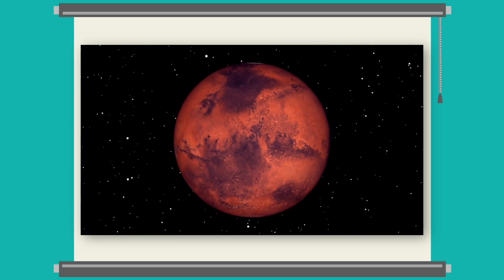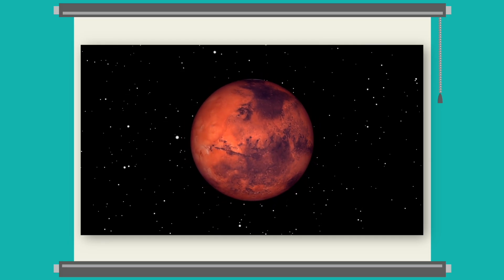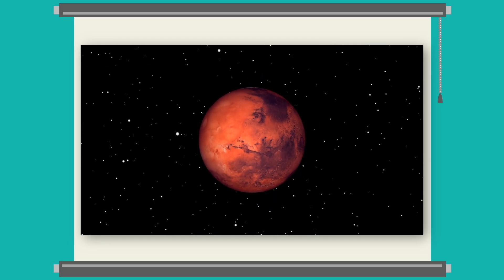And Mars is smaller than Earth. It's made of red rocks and dust. It's a lot colder, but it's the most similar planet to Earth.